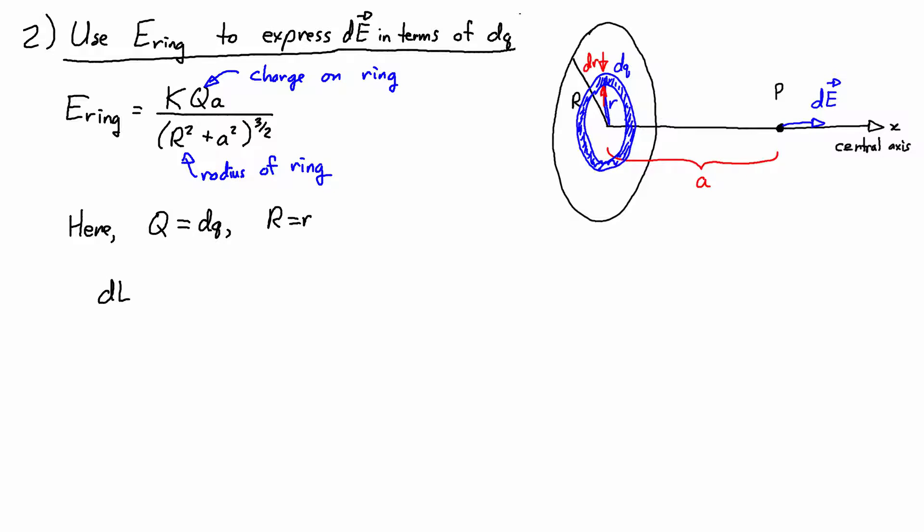And so then I get dE for the disk is equal to k times dq, because I'm substituting in for q times a, divided by, and now I have small r squared for the radius of the ring, plus a squared, all to the power of 3 over 2.